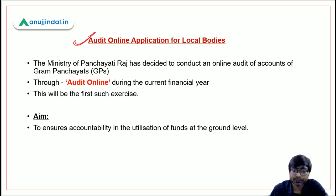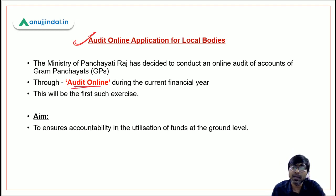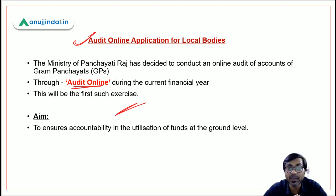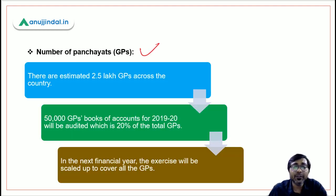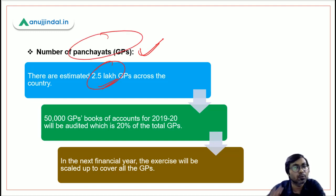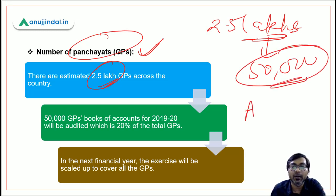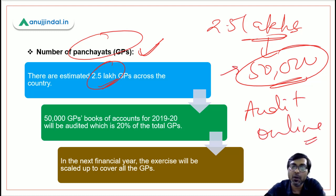The Ministry of Panchayati Raj has decided to conduct an e-audit of accounts of Gram Panchayats through the app named 'Audit Online'. This is the first such exercise in the history of Gram Panchayats in India. It has been done to ensure accountability in the utilization of funds. There are approximately 2.5 lakh Gram Panchayats in the country, out of which around 50,000 — about 20% — will be e-audited through this new app.